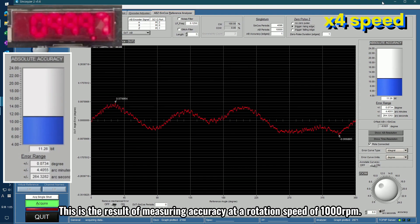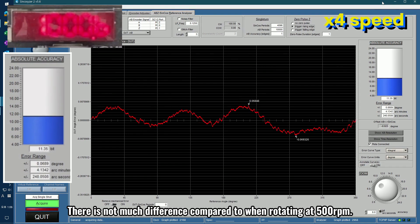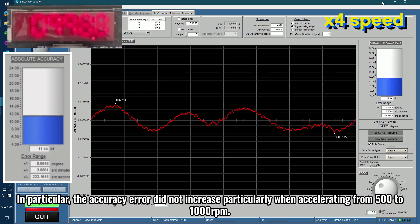This is the result of measuring accuracy at a rotation speed of 1000 revolutions per minute. There is not much difference compared to when rotating at 500 revolutions per minute. In particular, the accuracy error did not increase particularly when accelerating from 500 to 1000 revolutions per minute.